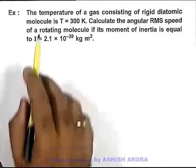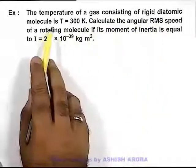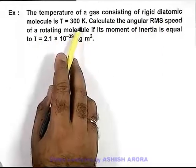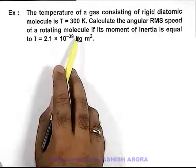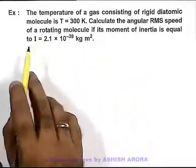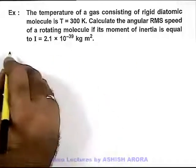In this example we are given that the temperature of a gas consisting of rigid diatomic molecules is 300 kelvin. We are required to calculate the angular RMS speed of a rotating molecule, if its moment of inertia is given as 2.1 × 10⁻³⁹ kilogram meter squared.